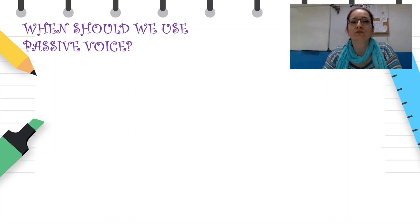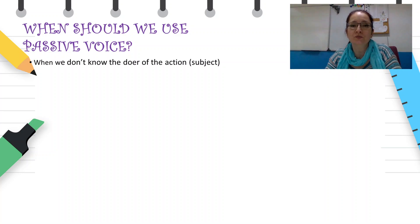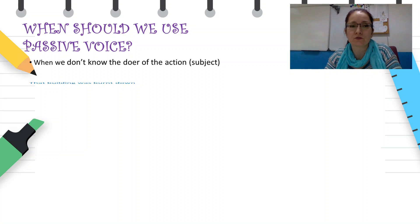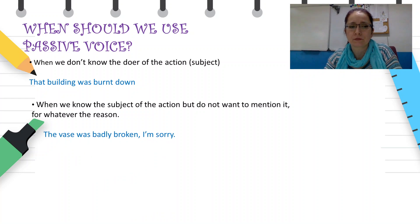When should we use passive voice? We can use passive voice when we don't know the doer of the action or the subject. For example: 'That building was burned down.' Also, when we know the subject of the action but we do not want to mention it, for whatever the reason — 'The vase was badly broken.'